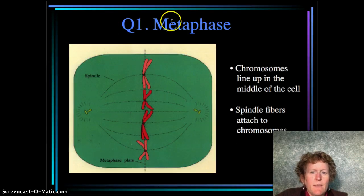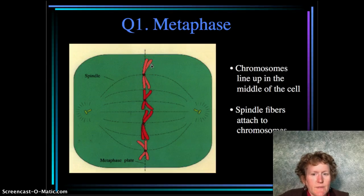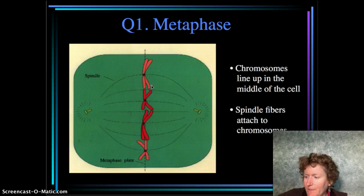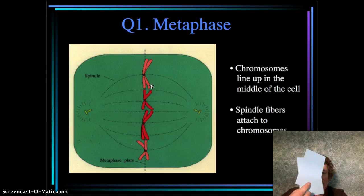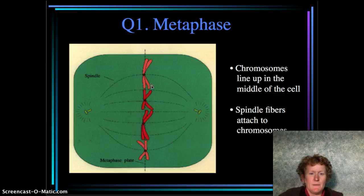Metaphase: the word 'meta' means middle, and that's where the chromosomes are in the metaphase stage of mitosis — they're in the middle. The spindle fibers are attached and they're going to pull those chromosomes apart. It's like there are two blue index cards each with a spindle fiber attached, so one will be pulled to each side.